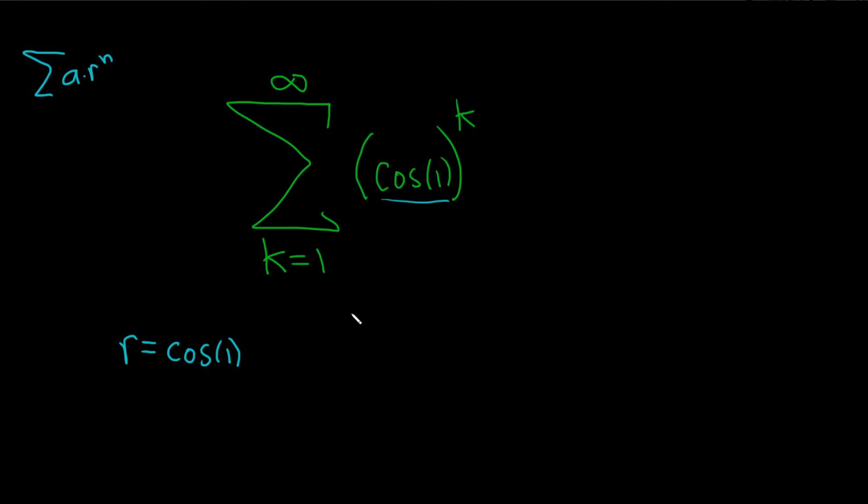Alright, so now we can use something called the geometric series test, abbreviated GST. The geometric series test says if the absolute value of r is less than 1, then we have convergence of our infinite series. If the absolute value of r is greater than or equal to 1, then we have divergence.